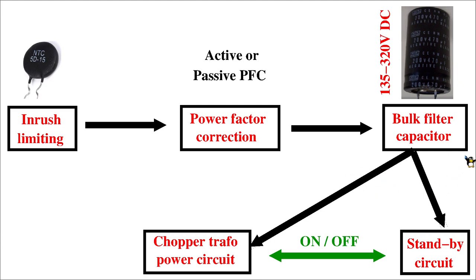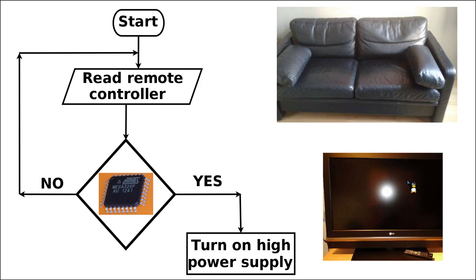This split into two different power paths is caused by the fact that in modern devices we want to have some advanced functionality. As a real life example, let us suppose that this power supply is in an LCD TV sitting on the desk. Nowadays everyone likes to be comfortable, so they take the remote control, sit on the sofa, push the power button, and the TV turns on even though it was turned off.